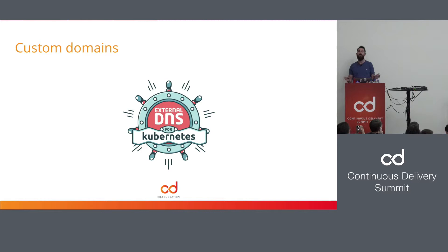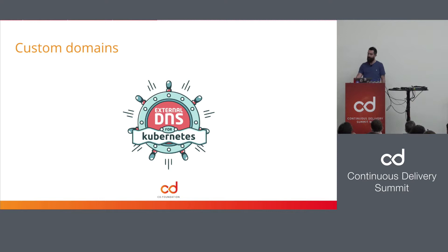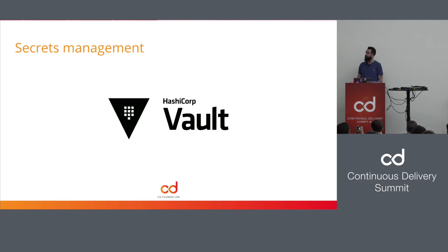External DNS watches your ingresses — a way in Kubernetes of exposing services externally — and then registers with DNS providers that new services exist. This avoids you having wildcard certs and those kinds of things.